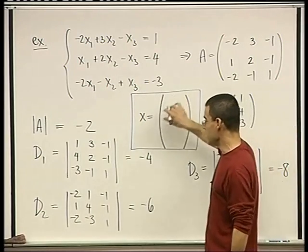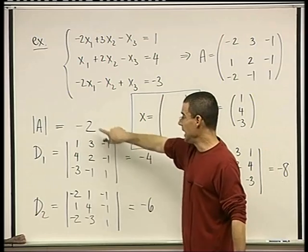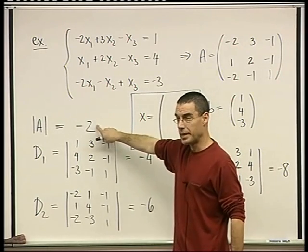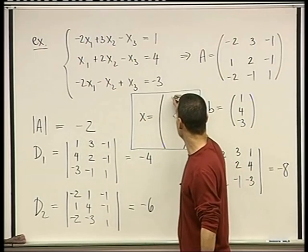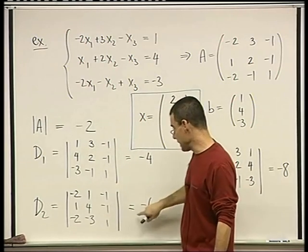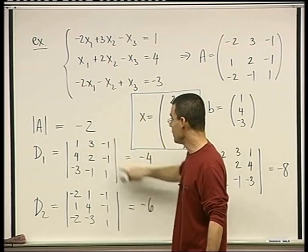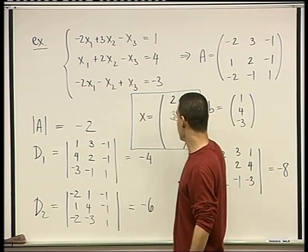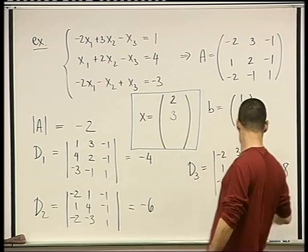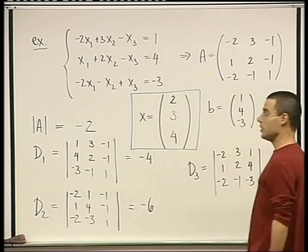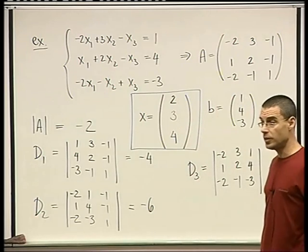The first entry is D1 divided by the determinant of the original A. Negative 4 divided by negative 2, 2. The second entry is D2 divided by the determinant of A. Negative 6 divided by negative 2, 3. And the third entry is negative 8 divided by negative 2, 4. This is the unique solution to this system.